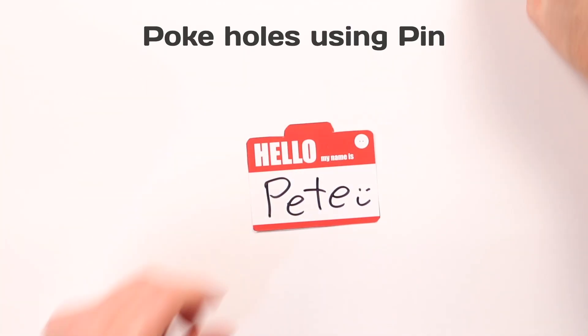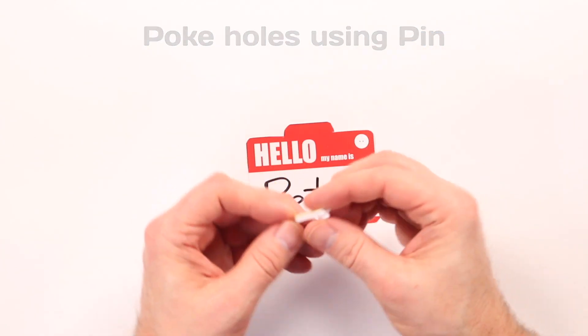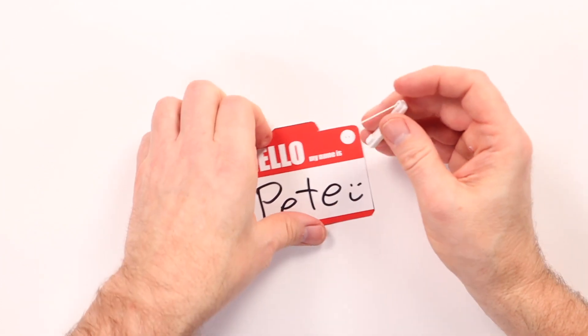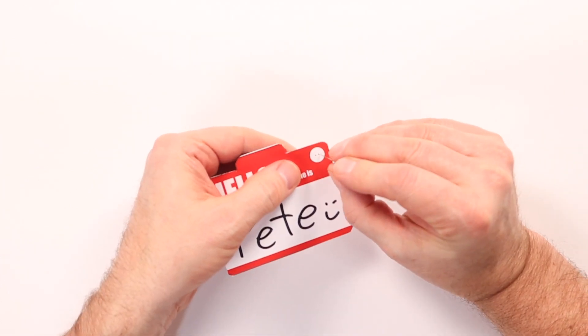Now we're going to poke two holes for the LED legs to go through. We're going to use our self-sticking pin for this. Open that up, poke through the holes.